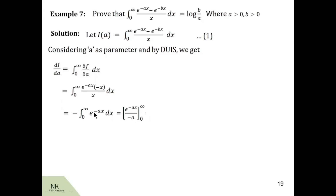We are left with minus e raised to minus ax dx over the limit 0 to infinity. The integration of e raised to minus ax is e raised to minus ax upon minus a. After substituting the upper limit, we get e raised to minus infinity which is 0, and substituting the lower limit 0 gives e raised to 0, that is 1. So after simplifying, we get di by da as minus 1 by a. Note: there was a missed minus sign which was rectified, so di by da equals minus 1 by a is correct.